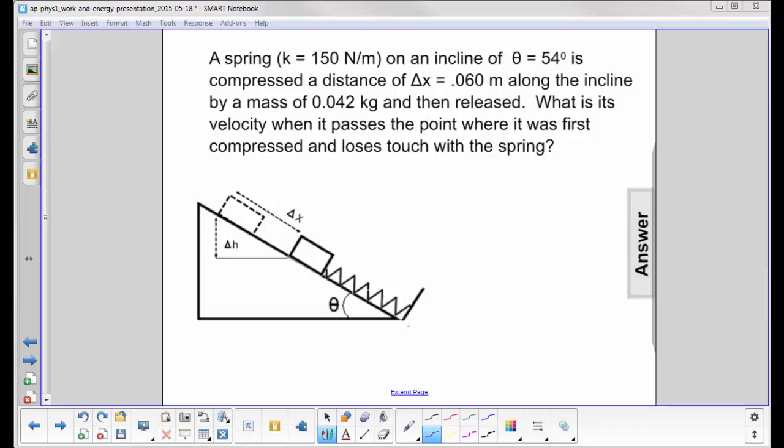A spring with k equals 150 newtons per meter is on an incline with theta equal to 54 degrees. The spring is compressed by pushing down on the block until the displacement is 0.060 meters, and then it's released.